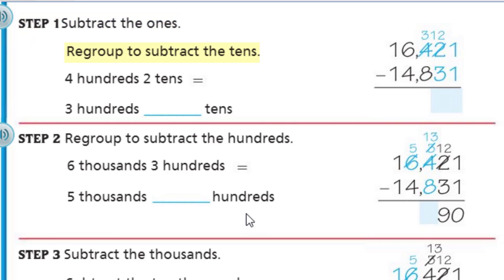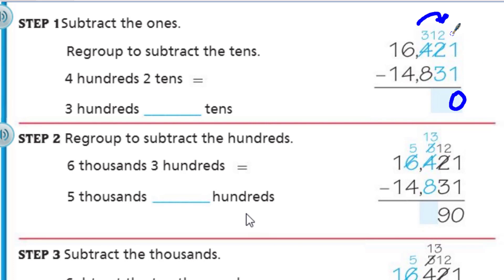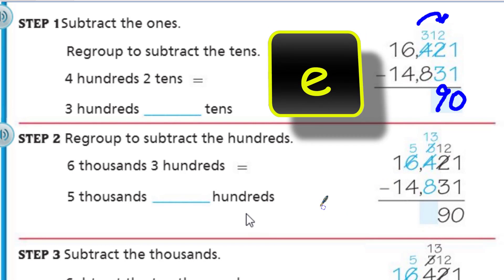Step one is to subtract the ones, then regroup to subtract the tens. Just like any other problem, even if this was a three-digit number, we always start with the ones. One minus one is zero — that's an easy one. Then we have a problem: we want to subtract three tens from two tens. We can't take three tens from two tens, so we have to regroup. We go next door and borrow 100. That four becomes a three because it gives away 100, making it 300. That 300 gives 10 tens to the tens place, so now we have 12 tens. 12 minus 3 is 9.